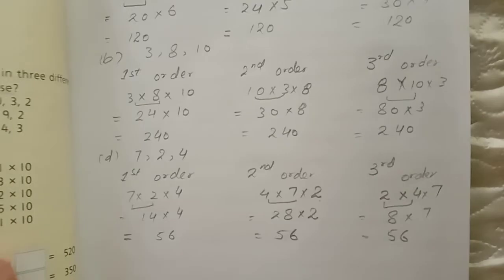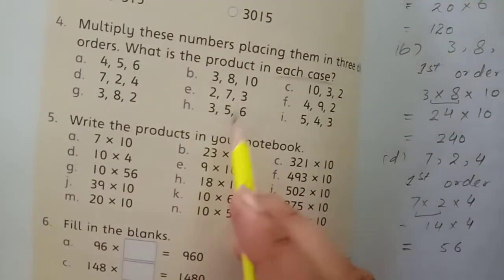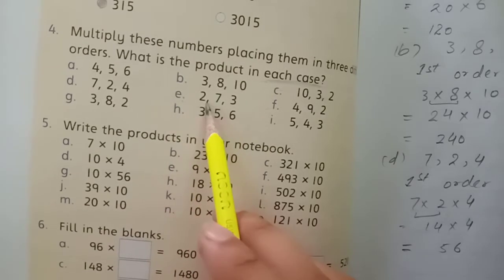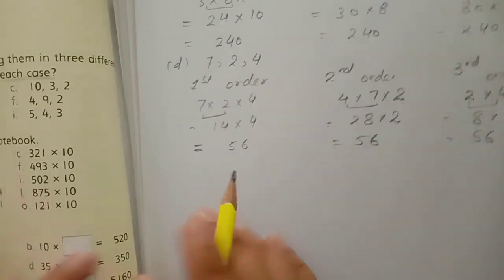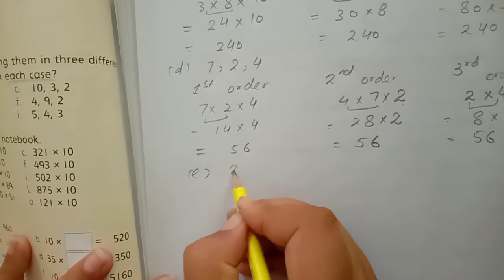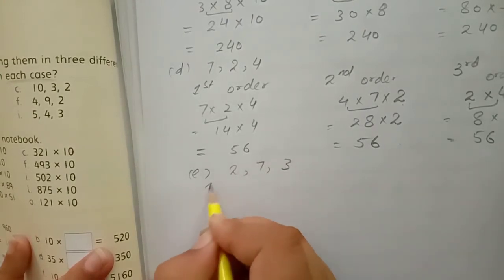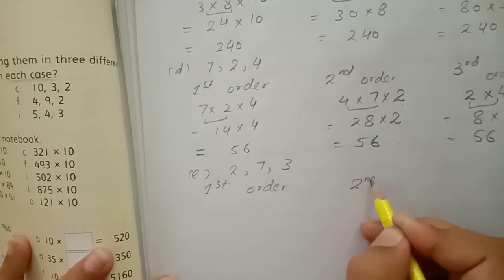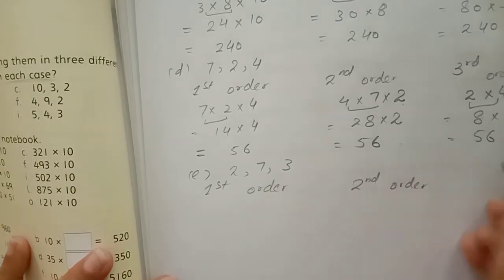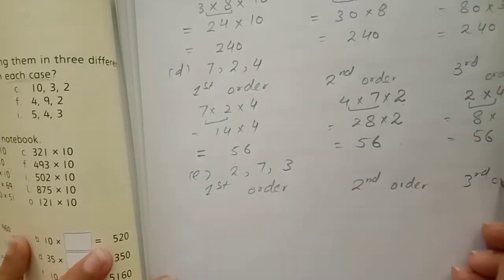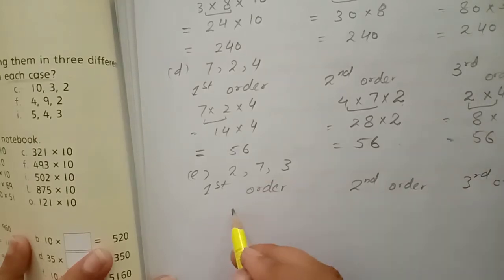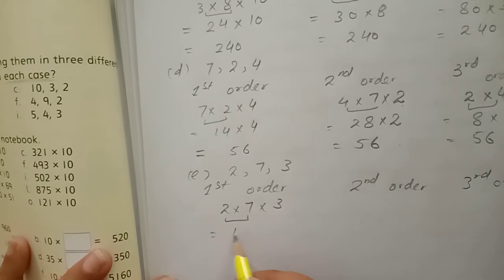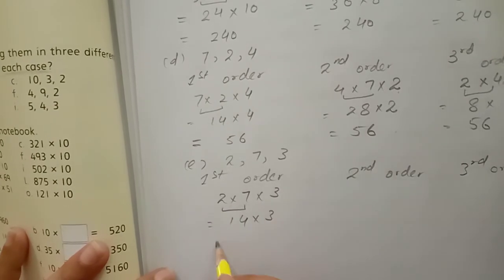Part E is remaining. Write the orders: first order, second order, third order. First order: 2 × 7 × 3.